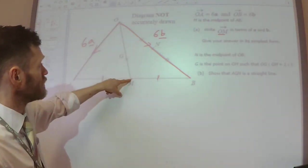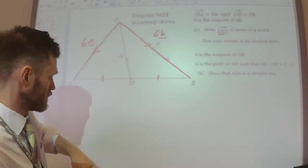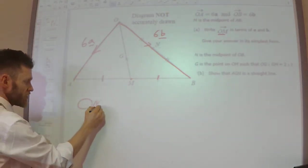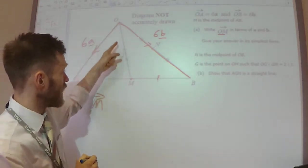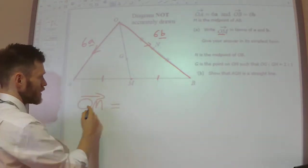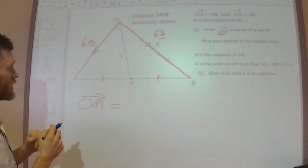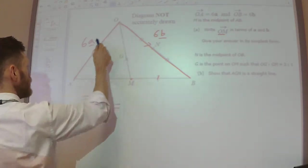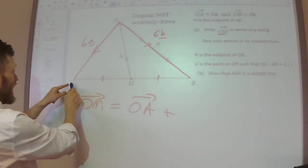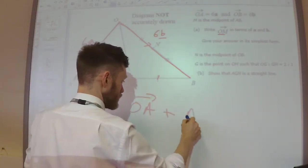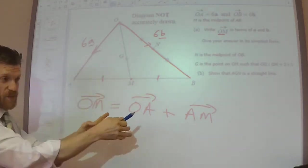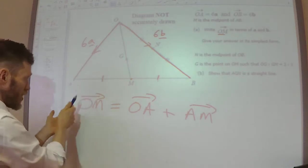So O to M, like that. What we do for this, we need to find some combination of vectors that will allow us to get O to M. Well, I could combine the vectors of O to A plus A to M. So if I combine these two vectors, that gives me the overall result of O to M.